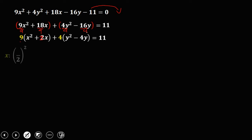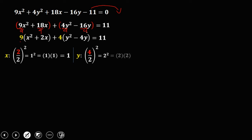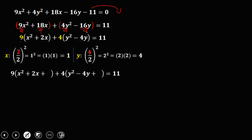Proceed to completing the square. For x: take 2 divided by 2, squared — that's 1² = 1. For y: take 4 divided by 2, squared — that's 2² = 4. Add these values inside their respective groups to create the perfect square trinomials. So for x we add 1, and for y we add 4.